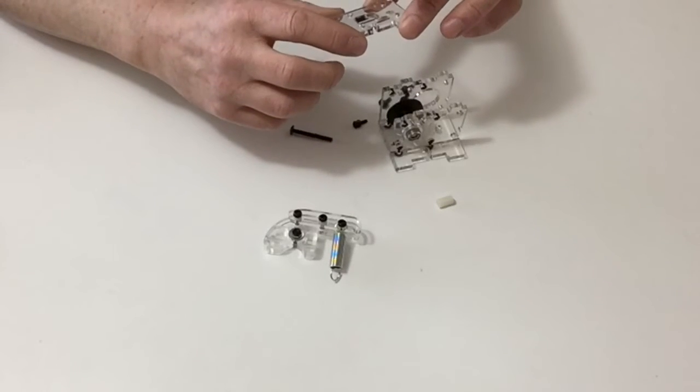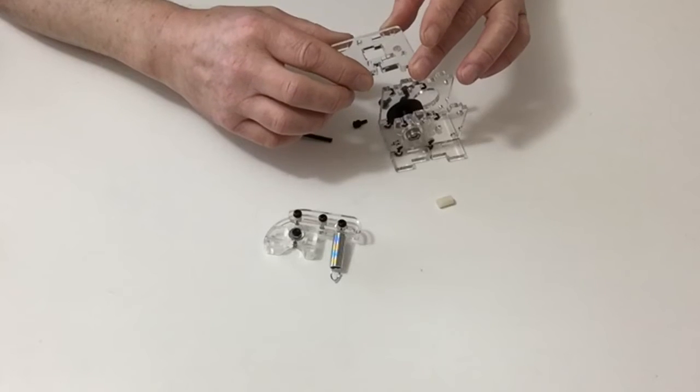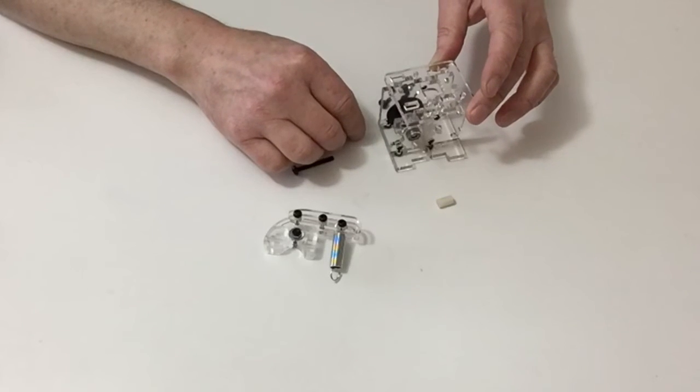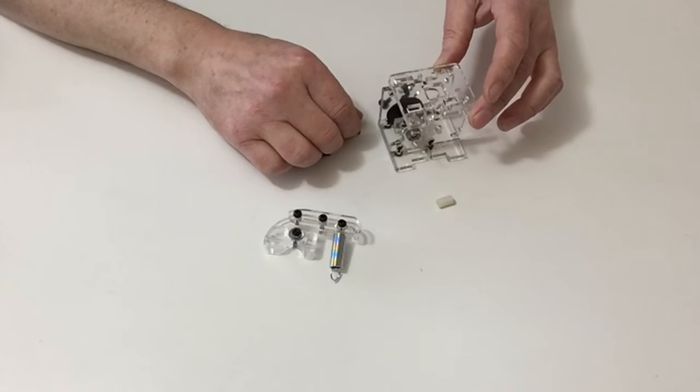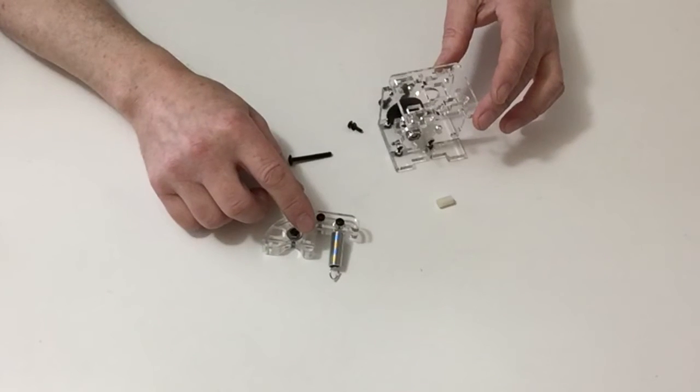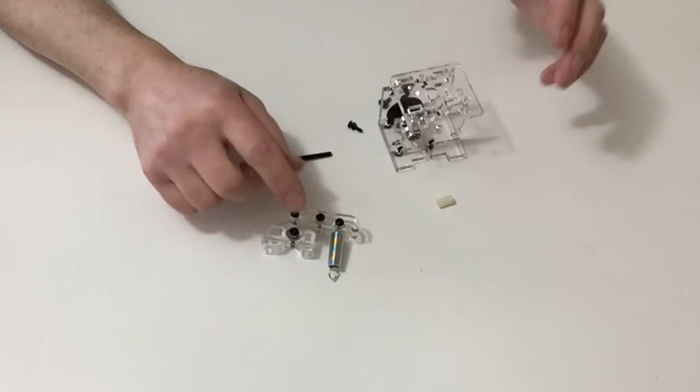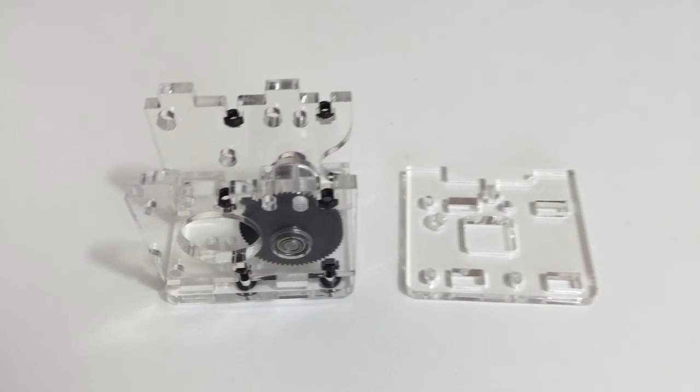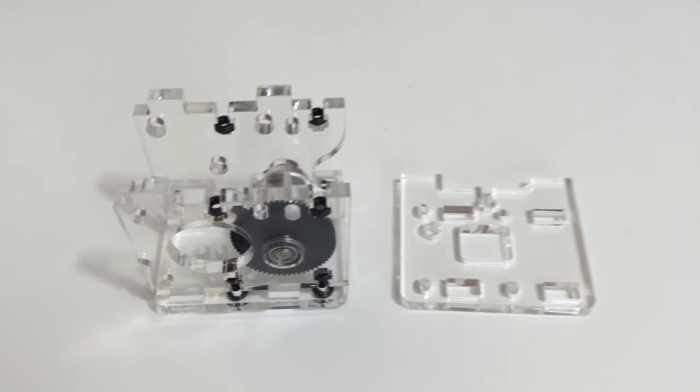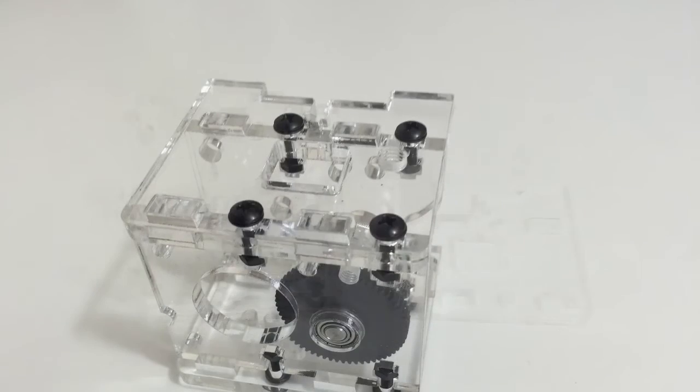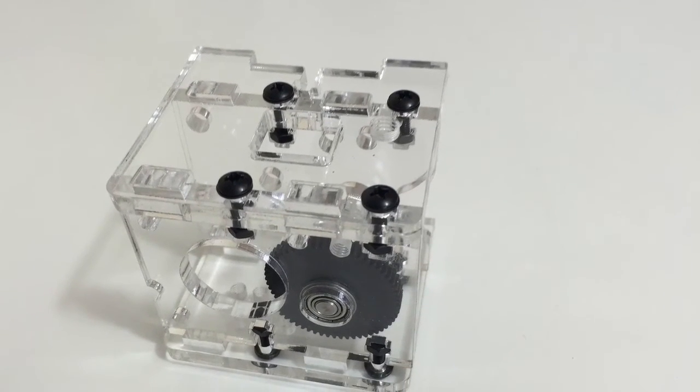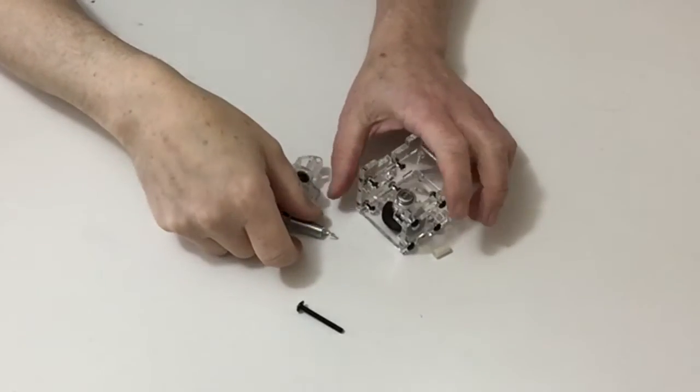Once you've done that, place the M3 nuts through the bottom. Once we've got to that stage, we'll then fit the extruder arm.